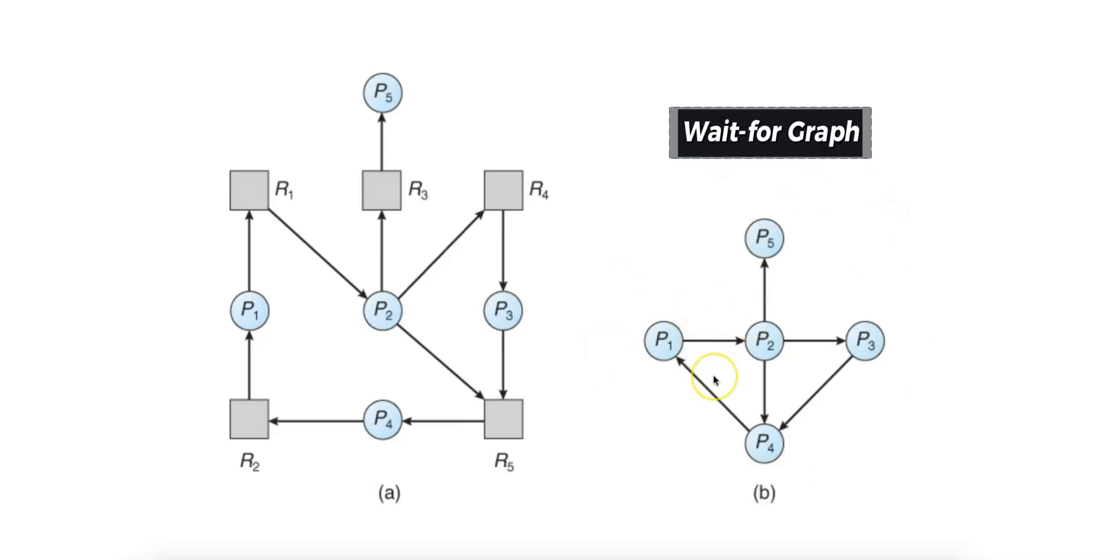A wait-for graph is a common approach used after the resource allocation graph identifies cycles. The wait-for graph is a directed graph in which processes are represented as nodes, and directed edges indicate that one process is waiting for a resource held by another process. A cycle in this graph signifies a deadlock. For example, P1 is waiting for a resource held by P2, P2 is waiting for a resource held by P4, and P4 is waiting for a resource held by P1.